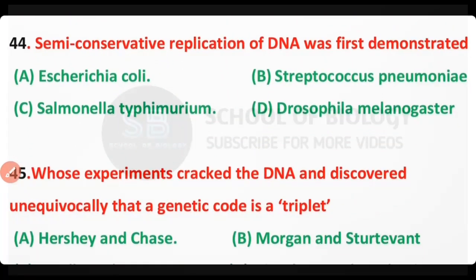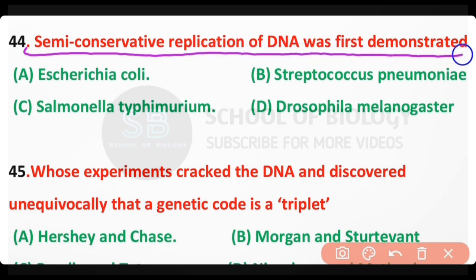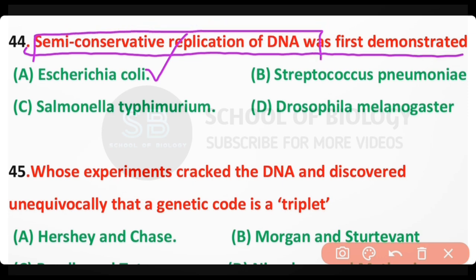Question number 44: Semiconservative replication of DNA was first demonstrated in — E. coli, Streptococcus pneumoniae, Salmonella typhimurium, or Drosophila melanogaster? The correct answer is option A: semiconservative replication of DNA was first demonstrated in E. coli.